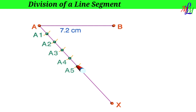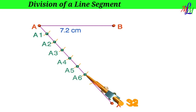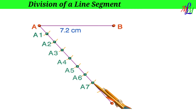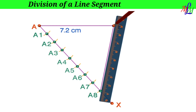Continuing with the same fixed radius, mark points A5, A6, and A7. Then with A7 as center draw one more arc and identify the point of intersection as A8. We now have 8 equal points marked on ray AX.